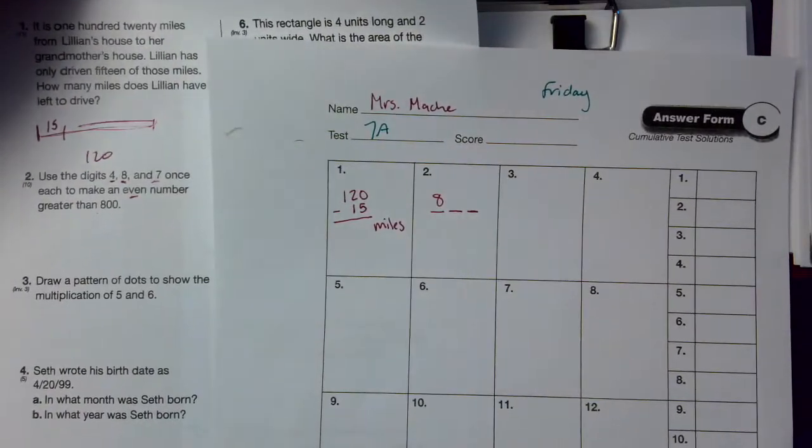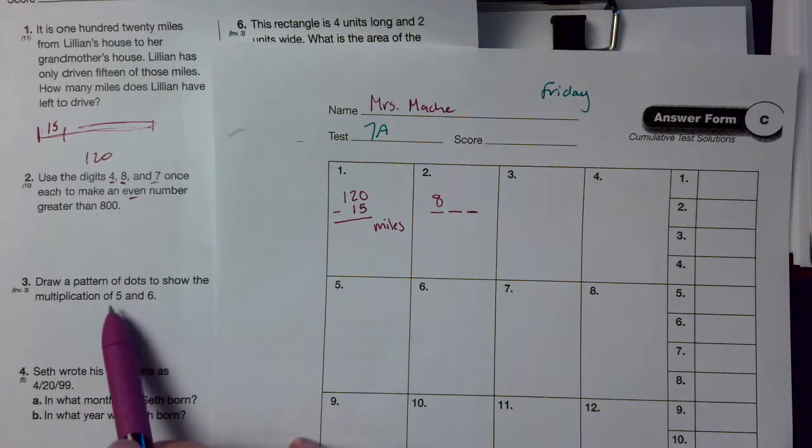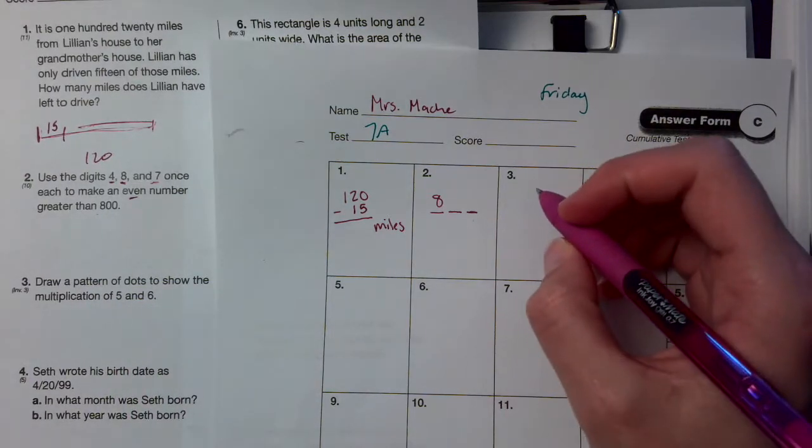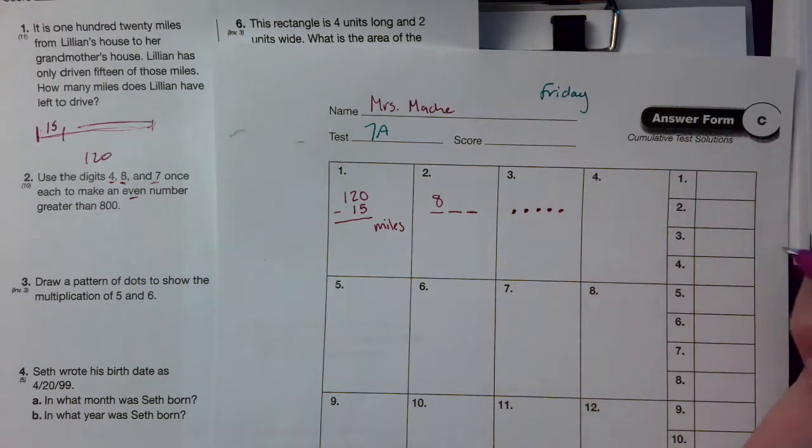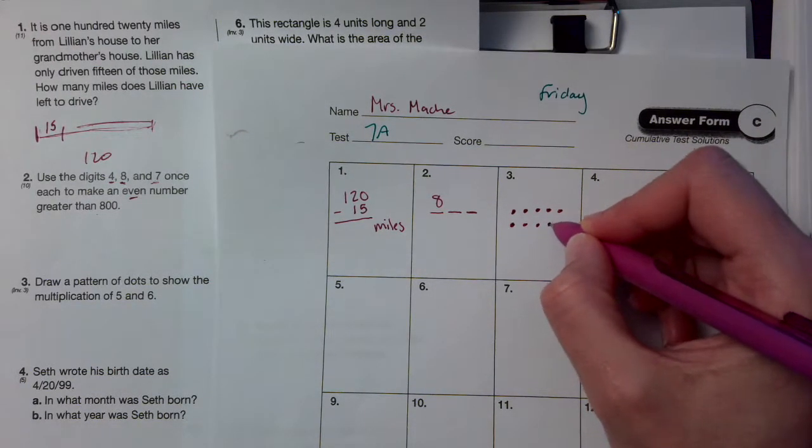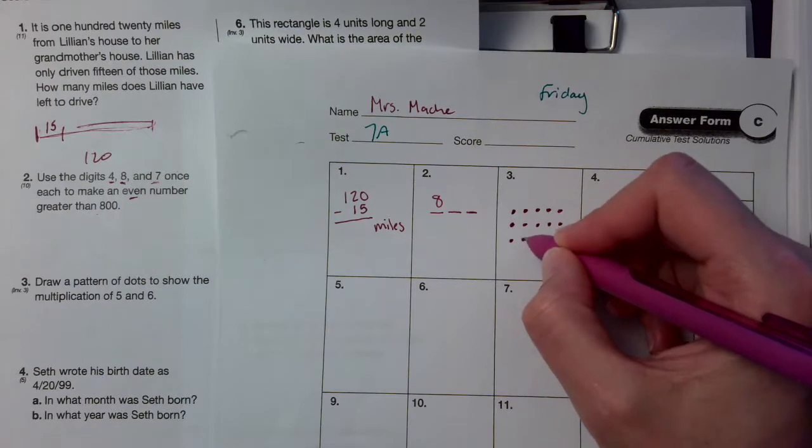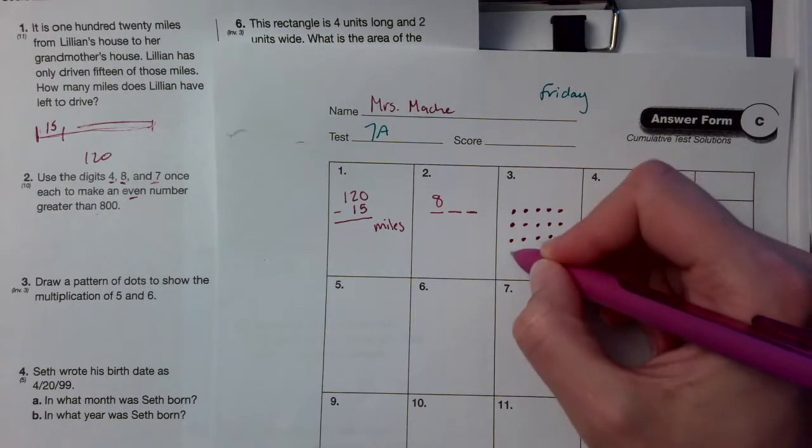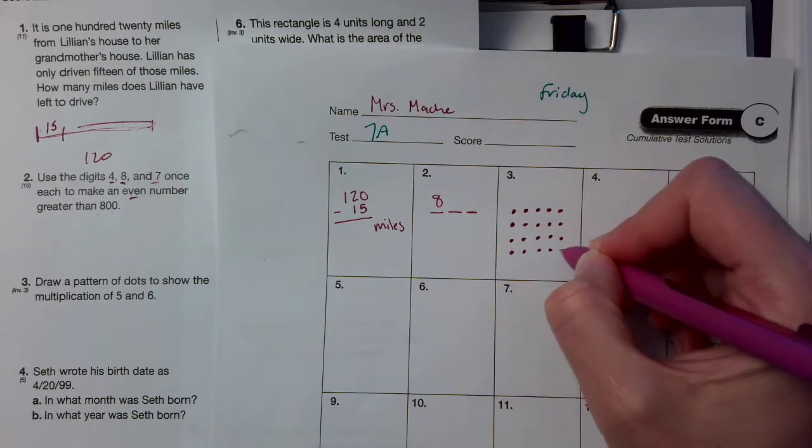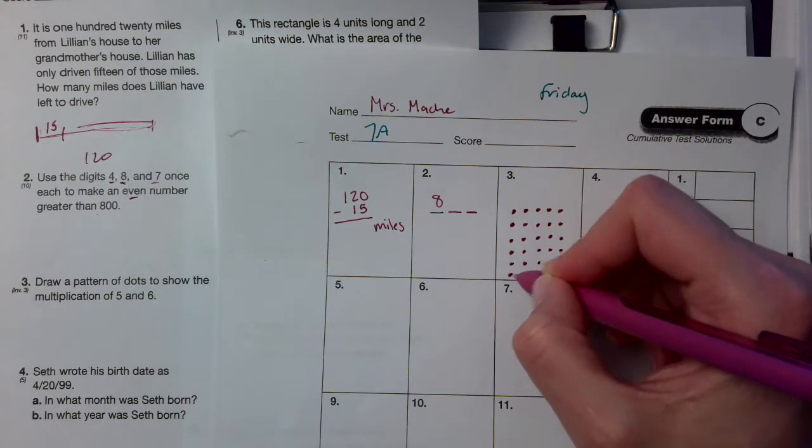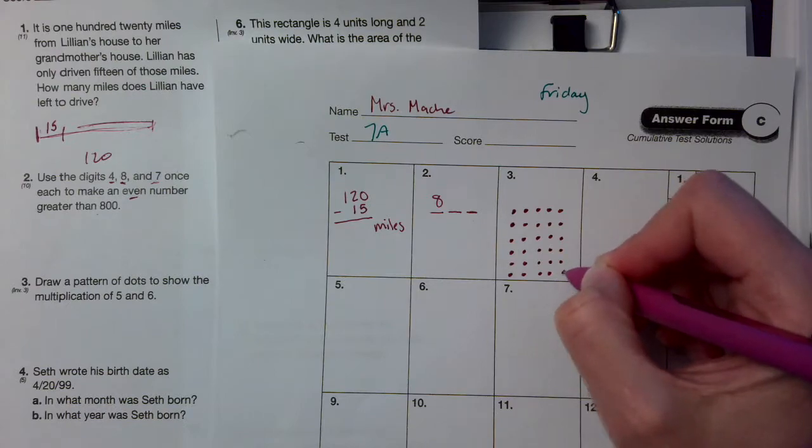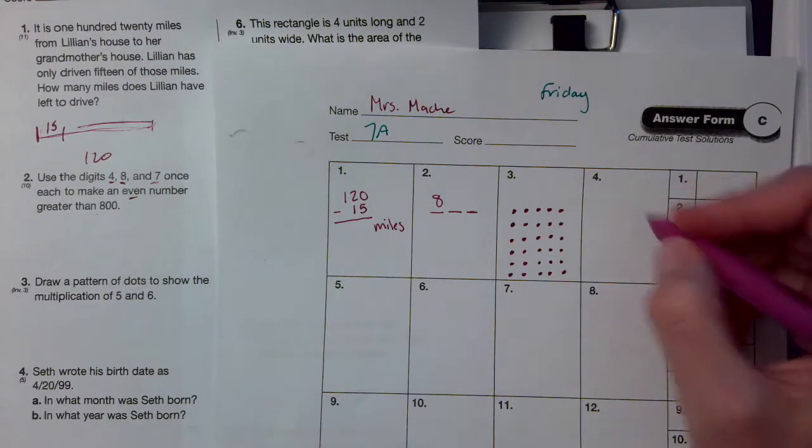Number 3 says draw a pattern of dots to show the multiplication of 5 and 6. So you've got to do 5 times 6. So you do 5 rows, sorry, 6 rows with 5 in each row. That's a great one to write C box.